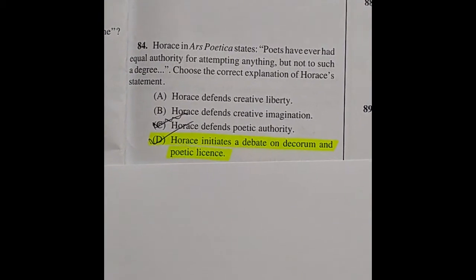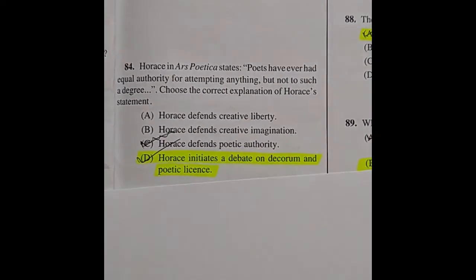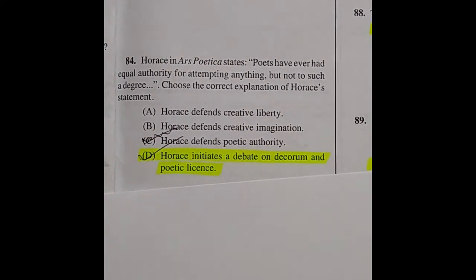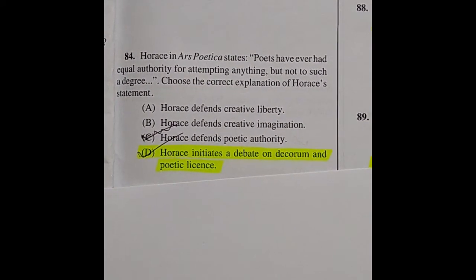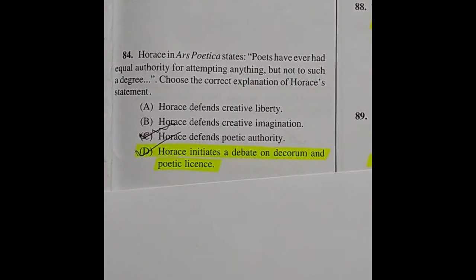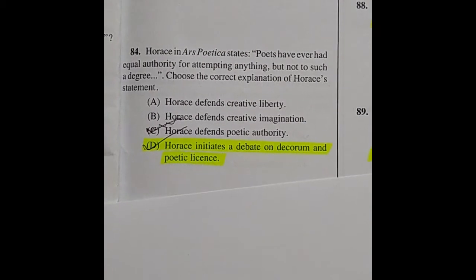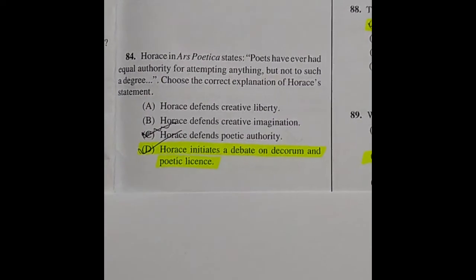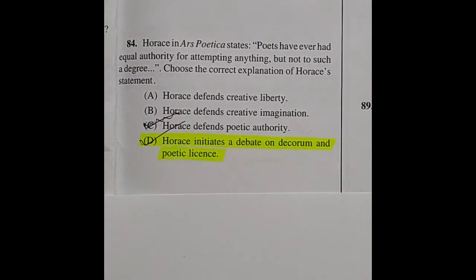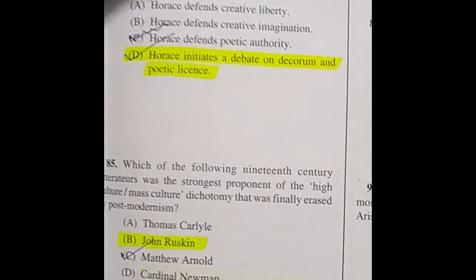Question 84: Who in Ars Poetica states 'poets have ever had equal authority for attempting anything, but not to such a degree'? Choose the correct explanation of Horace's statement. The right answer is option D: Horace initiates a debate on decorum and poetic license.